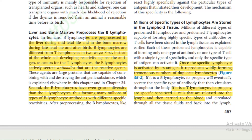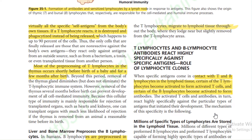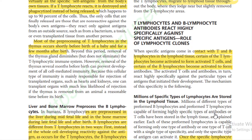Second, B lymphocytes have greater diversity than T lymphocytes, forming many millions of types of B lymphocyte antibodies with different reactivities. T lymphocytes migrate to lymphoid tissue throughout the body. When a specific antigen comes in contact with T and B lymphocytes in the lymphoid tissue, certain T lymphocytes become activated to form T cells and certain B cells become activated to form antibodies.